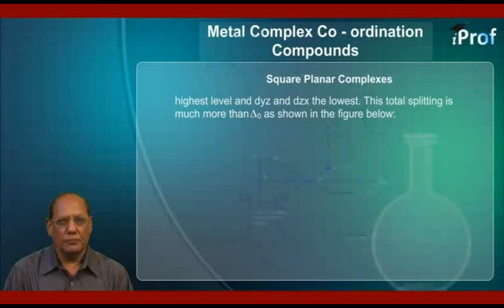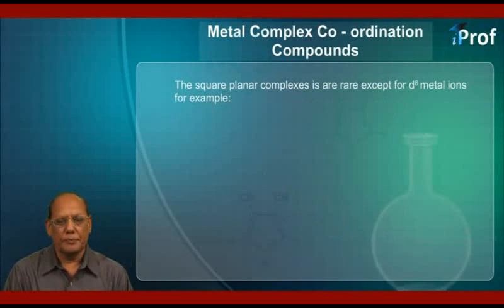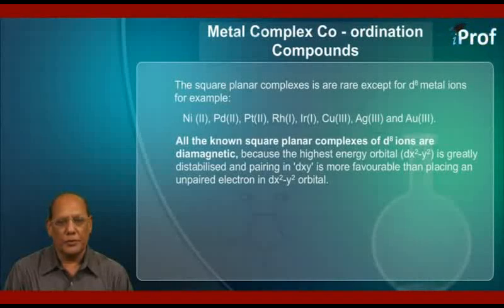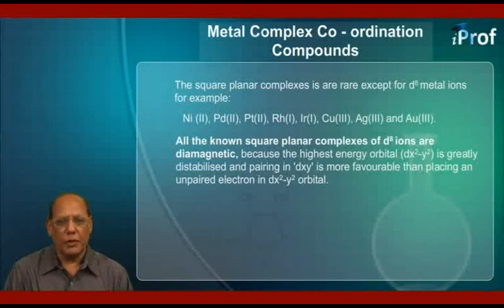This total splitting is much more than delta O, as shown in the figure below. Now, square planar complexes are rare except for d8 metal ions — for example, nickel(II), palladium(II), platinum(II), rhodium(I), iridium(I), copper(III), silver(III), and gold(III). All square planar complexes of d8 ions are diamagnetic, because the highest energy orbital, dx²-y², is greatly destabilized, and pairing in dxy is more favorable than placing an unpaired electron in dx²-y².